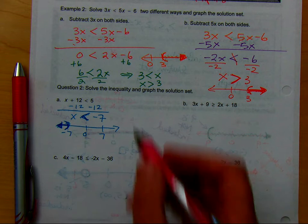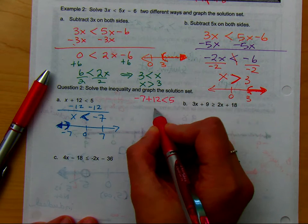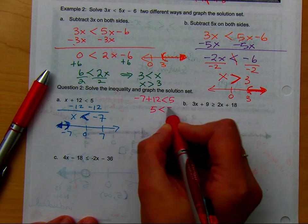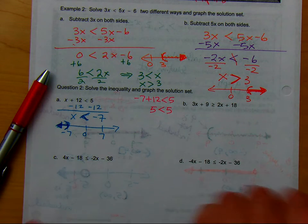If you were to plug in negative 7 plus 12 is less than 5, you would get 5 is less than 5. Is that true? 5 is not less than 5. So, that actually didn't really check out.